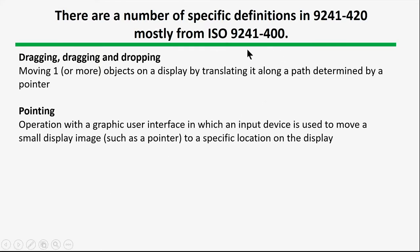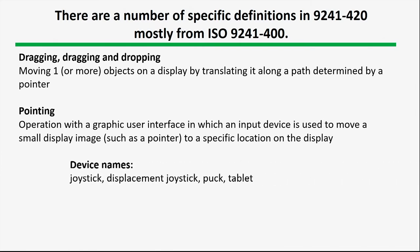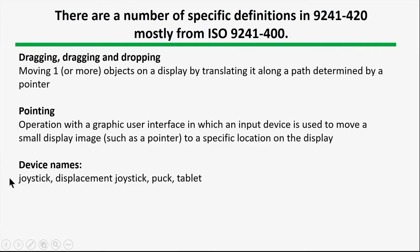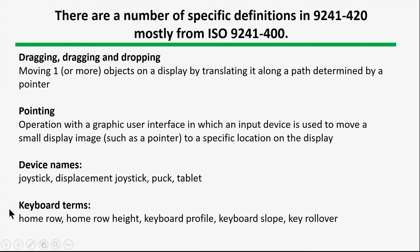These are terms that appear in ISO 9241-400, the overview document for physical devices. There's a definition of what dragging is and what pointing is — if we're going to do tests, we need a formal definition of these tasks. There are also definitions for device names. Sometimes you encounter oddball devices and wonder how to classify them — the formal definition helps. And because there's a lot of keyboard information in this document, there are terms like home row height, slope, rollover, and how these things are measured.